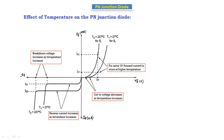In the forward bias, for a normal PN junction silicon diode at 27°C, the diode starts conducting from a certain point. Now if we increase the temperature from 27°C to 227°C, the diode starts conducting earlier. From this we can say that the cut-in voltage decreases as temperature increases. Before 27°C, the diode starts from this position.